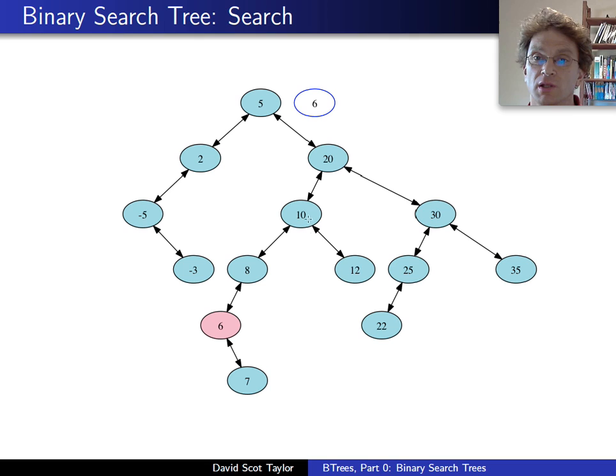So I basically just walk down the tree, and by checking the value I'm searching for against the node as I walk down, I can tell, do I search the left tree, or the right tree, or have I found it already? So in this case, great, I found it.